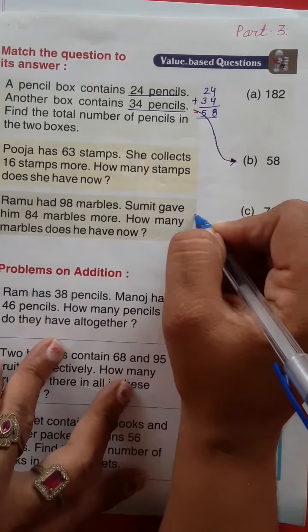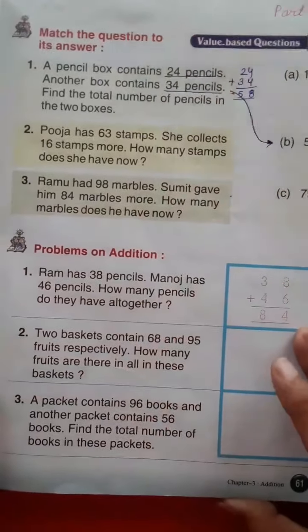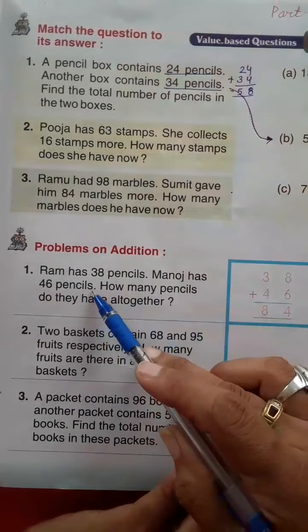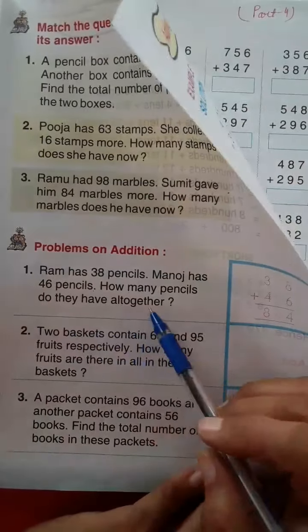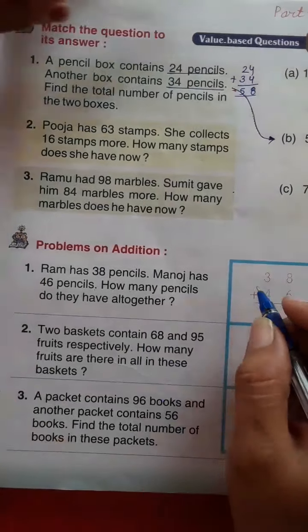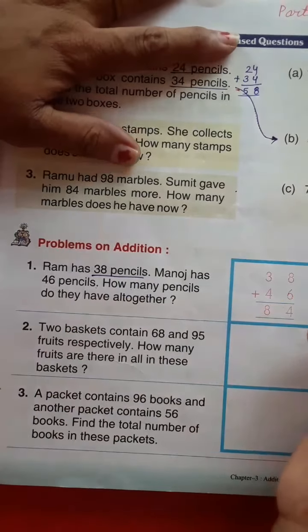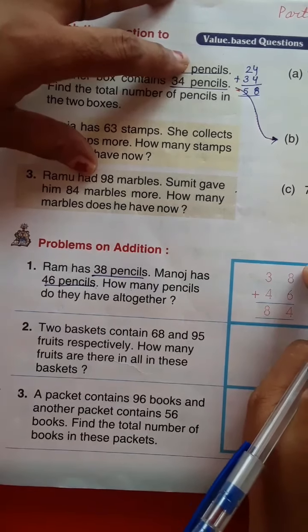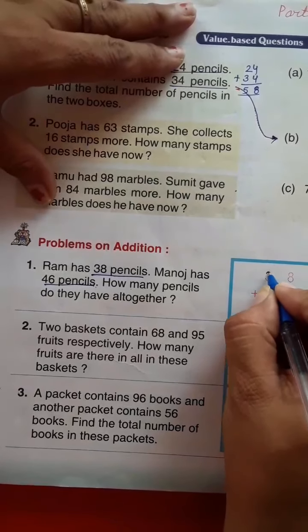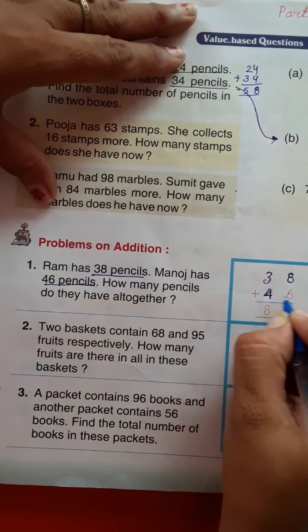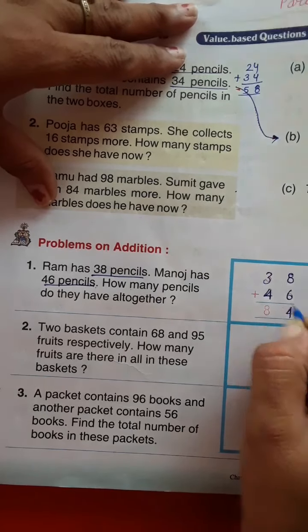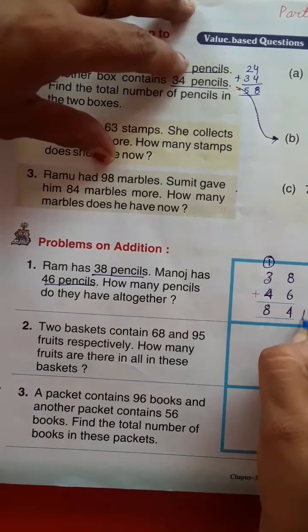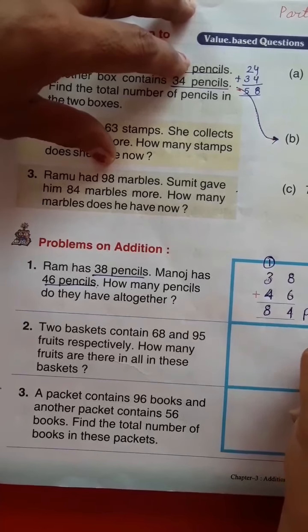Ye do aapko book me homework me solve karne. Now, problems on addition. Ram has 38 pencils, Manoj has 46 pencils. How many pencils do they have all together? Yaani Ram ke paas kitni pencils ho gayi? 38 pencils. Manoj ke paas kitni pencils hain? 46 pencils. Toh dono ko mila karke kul kitni pencils hain? Toh 38 plus 46. 8 aur 6, 14 ka 4, carry 1. 3 and 4, 5, 6, 7, and 1, 8. Toh total kitni pencils hain? 84 pencils hain.